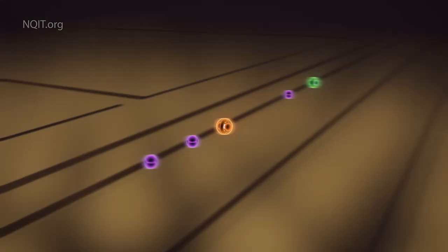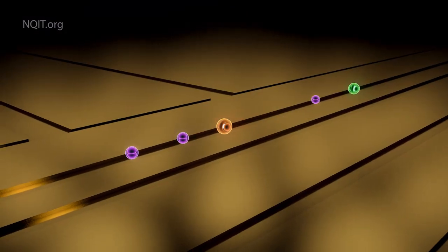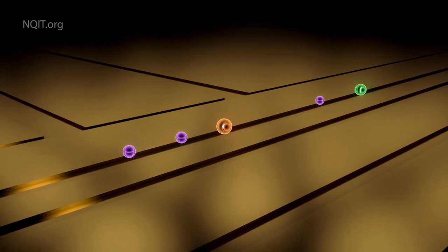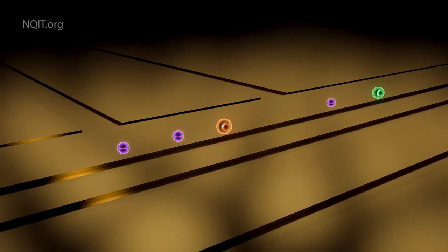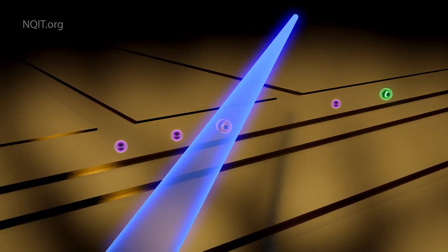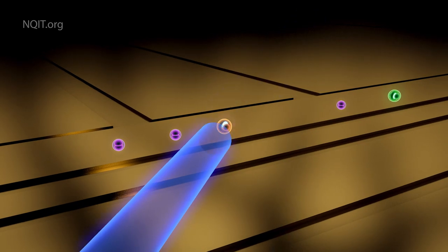Let's zoom out. We see gold strips below. These produce electric fields holding our ions still without physically touching them, and again we see a laser causing an ion to become excited and emit its photon.